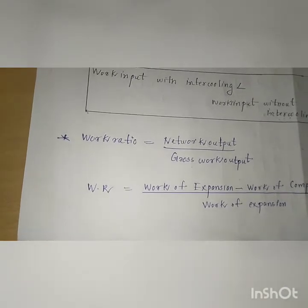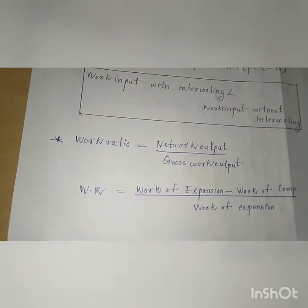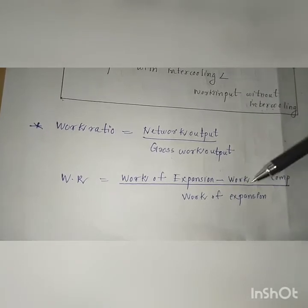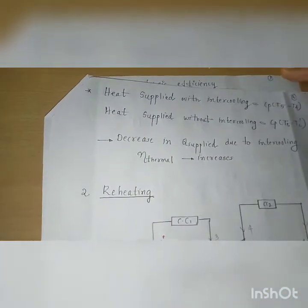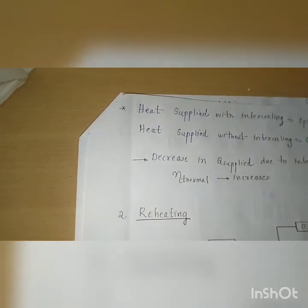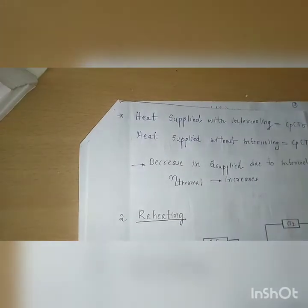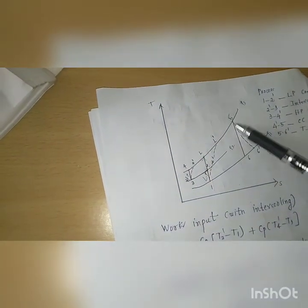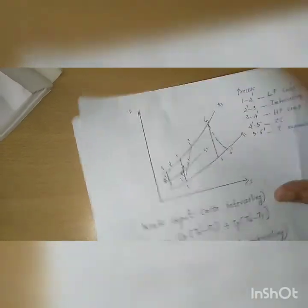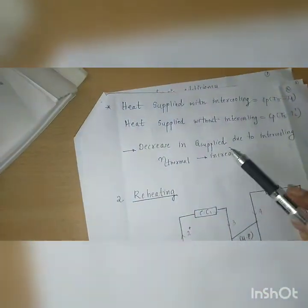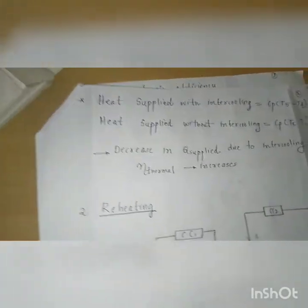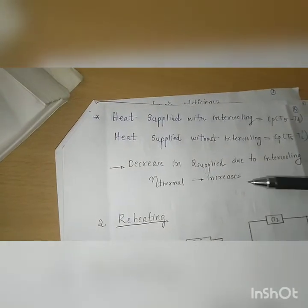Now we go to work ratio: net work output divided by gross work output. That is, work ratio equals work of expansion minus work of compression, divided by work of expansion. Heat supplied with intercooling is Cp × (T5 − TL dash). Without intercooling this much heat is needed; with intercooling, less heat is needed. This decrease in heat supply due to intercooling means thermal efficiency is increasing. This is about intercooling techniques used to increase the efficiency of the turbine.